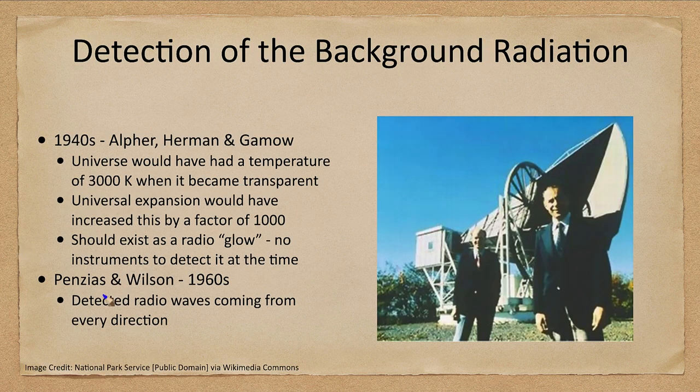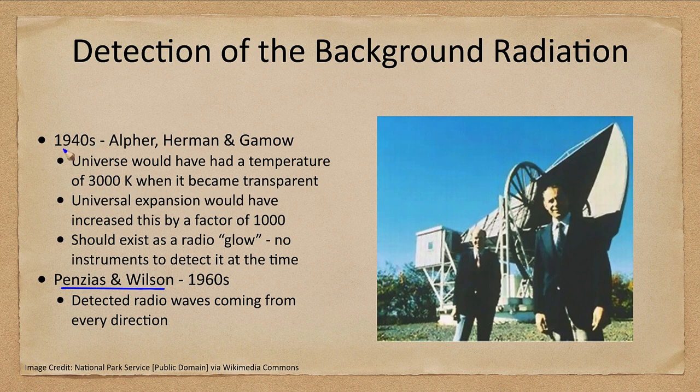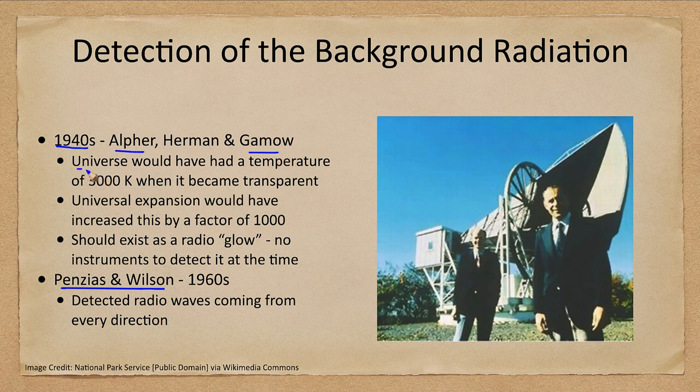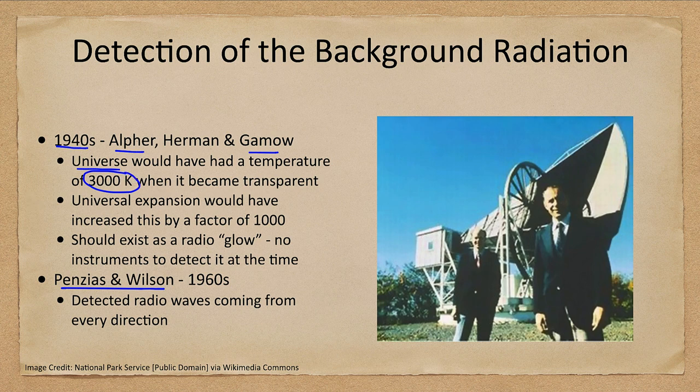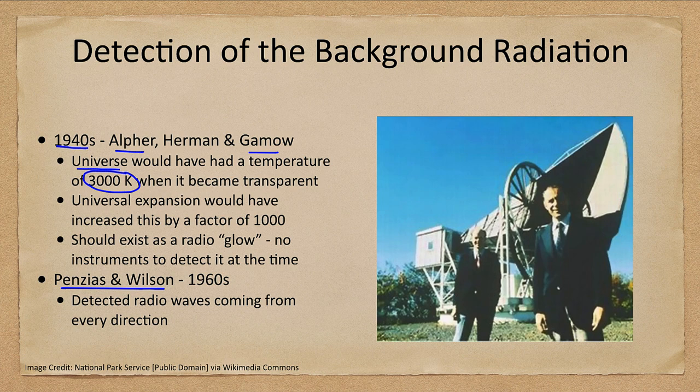It was Penzias and Wilson here who detected radio waves coming from every direction in the sky. However, this was predicted in the 1940s when Alpher, Hermann, and Gamow found out that the universe would have had a temperature of 3000 Kelvin when it became transparent. Now 3000 Kelvin gives off some red light, but mostly infrared light.